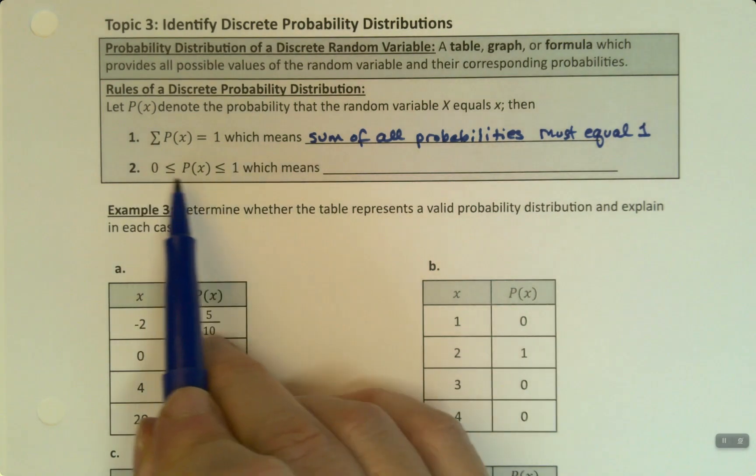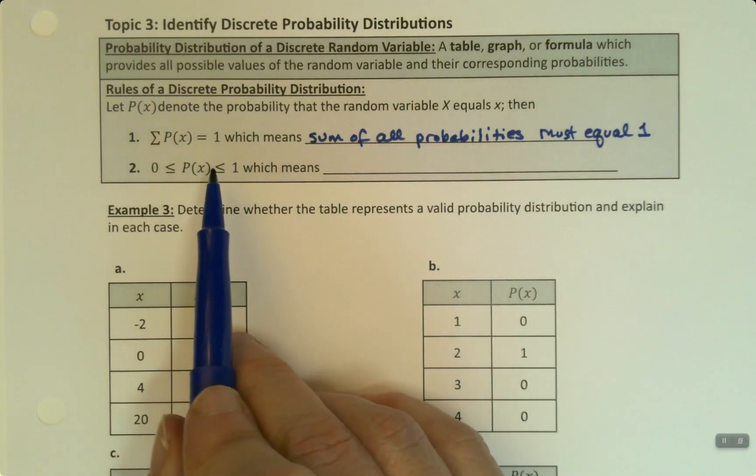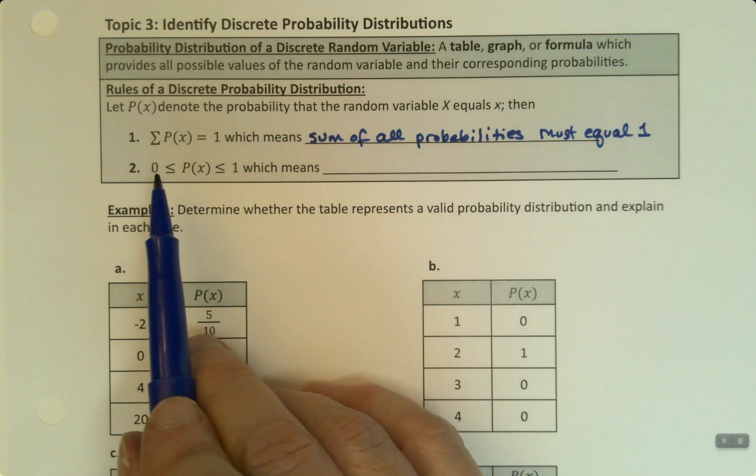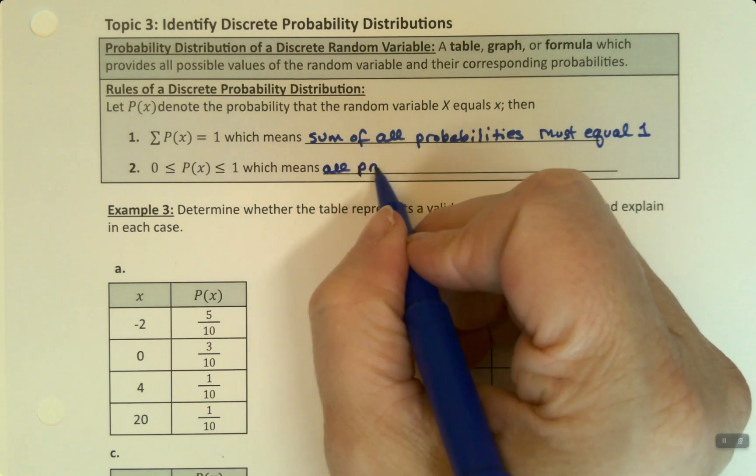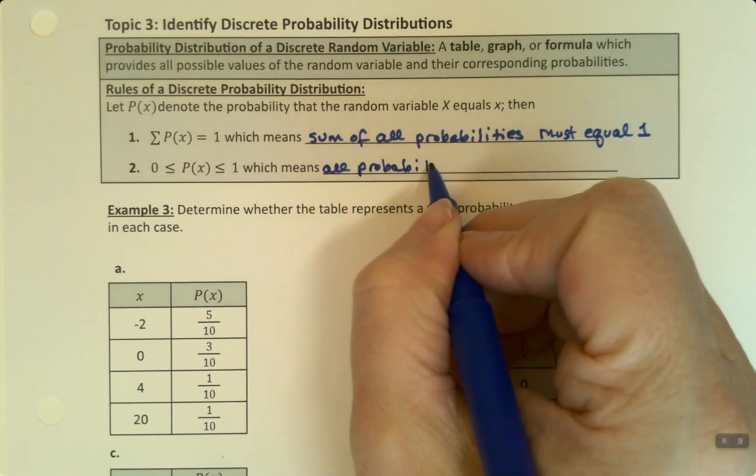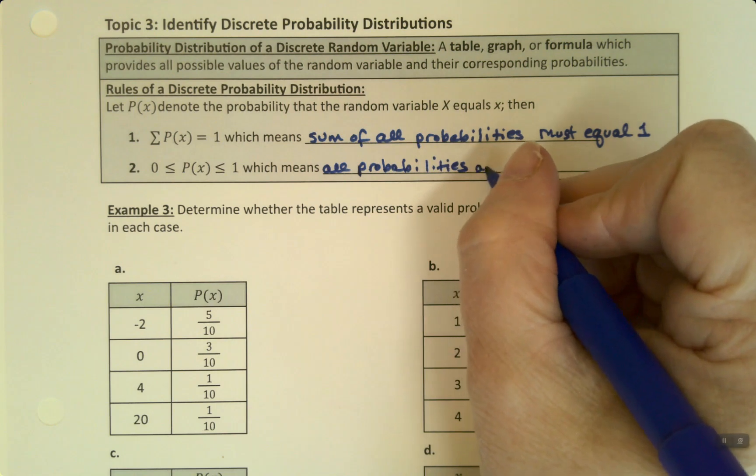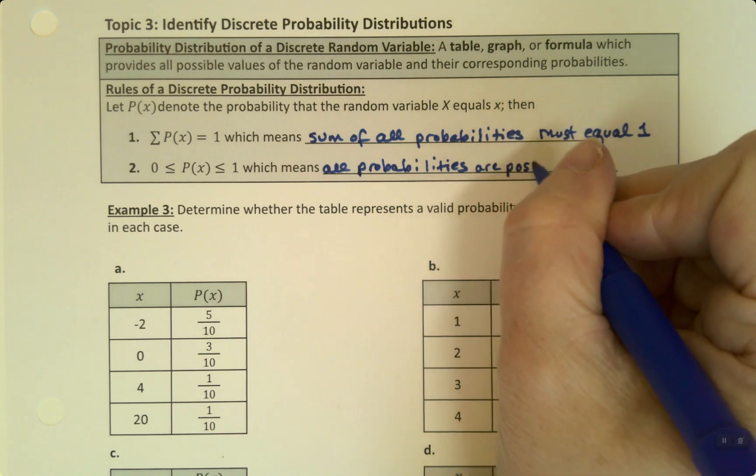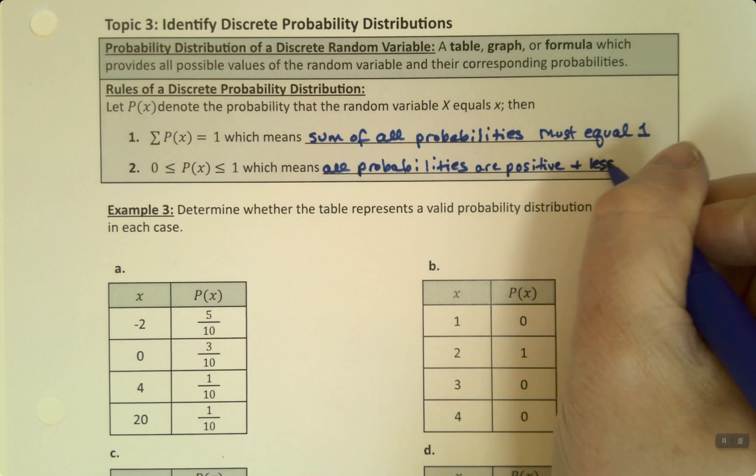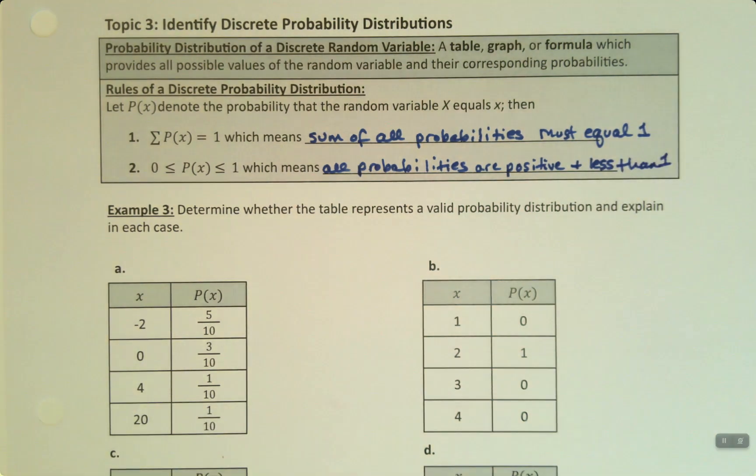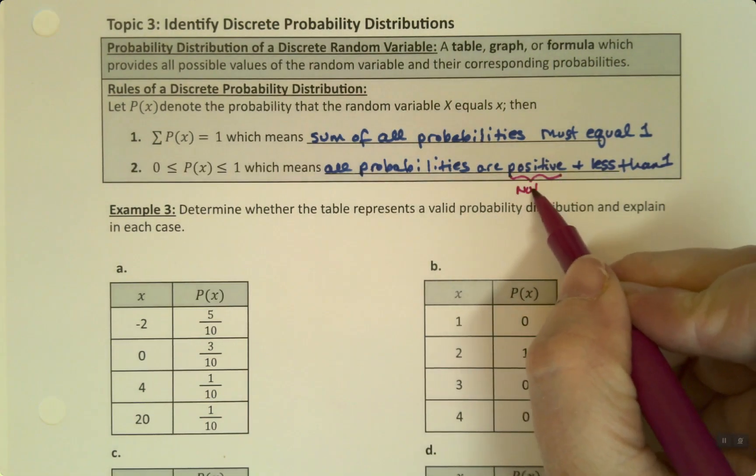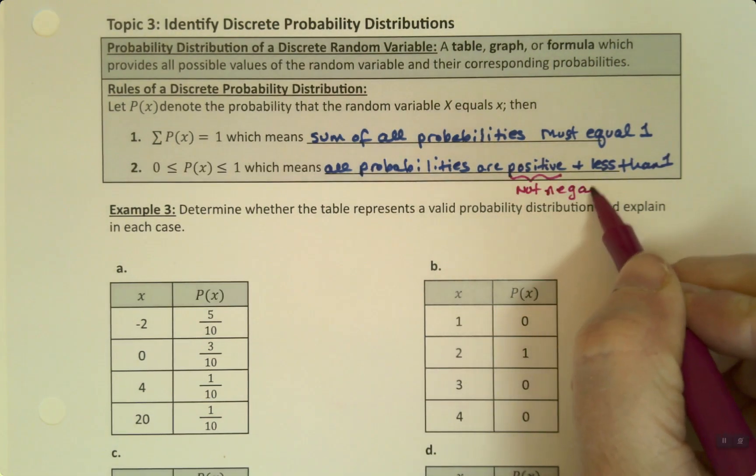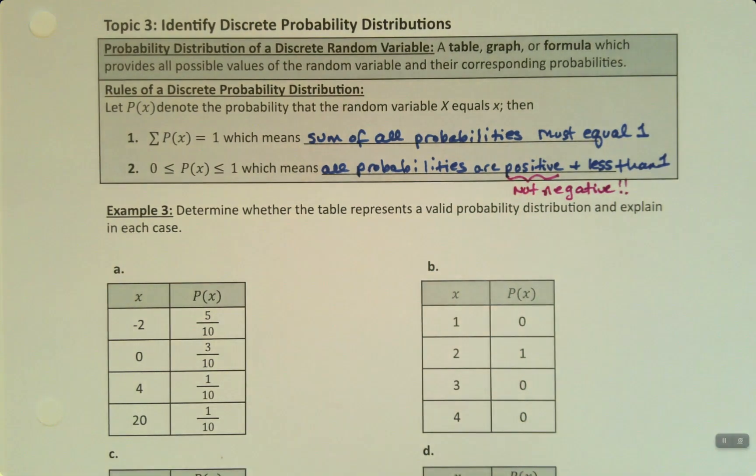And then all the probabilities have to be between 0 and 1. You cannot have any negative probabilities, nor a probability that's bigger than 1. So all probabilities are positive, or not negative if you want to say, positive and less than 1. Sometimes, instead of positive, a lot of times I'll write not negative. You can't have a negative probability. That would be bad. It doesn't exist.